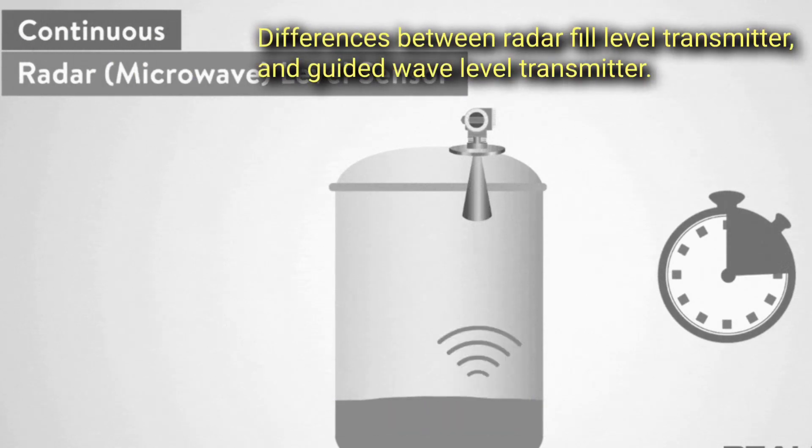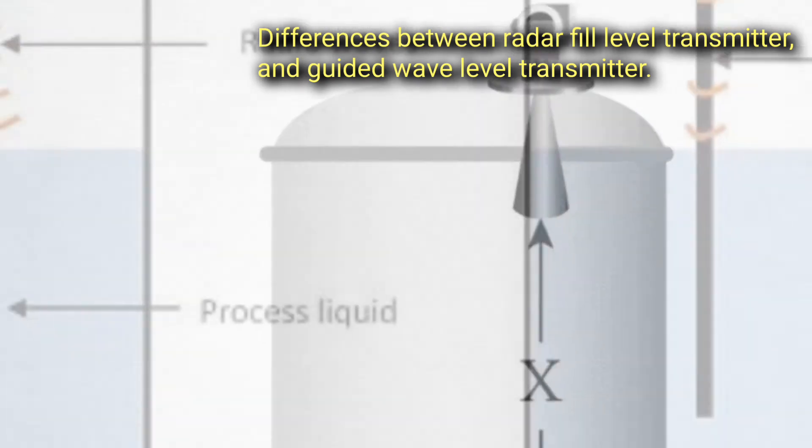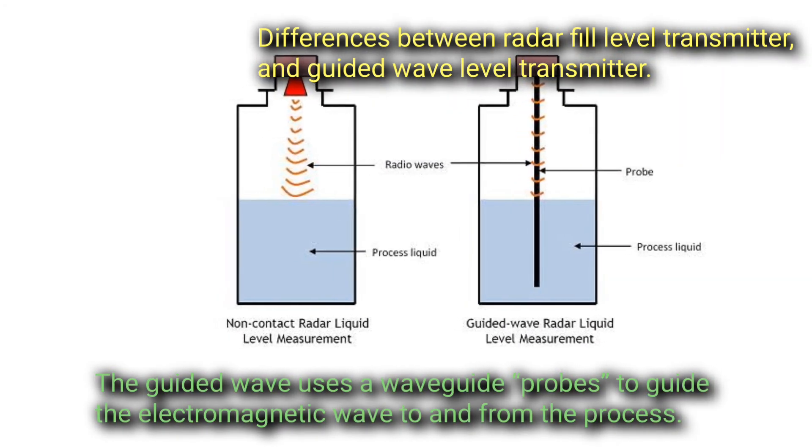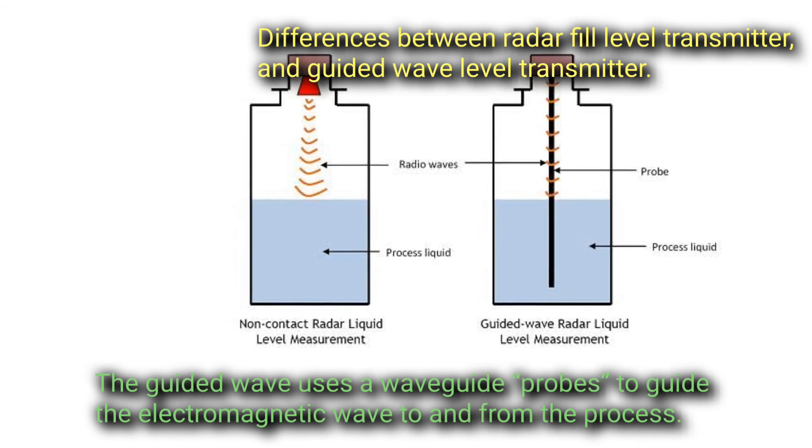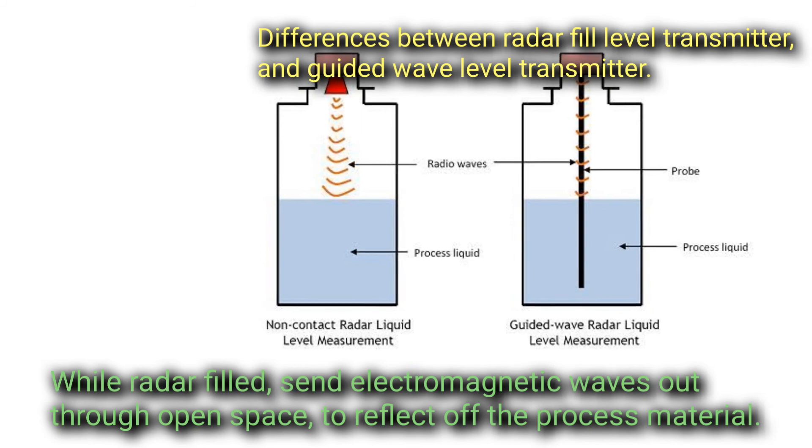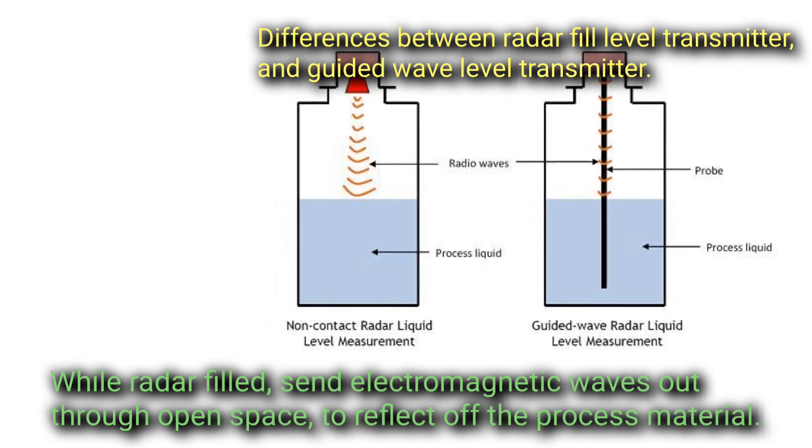Difference between radar fill level transmitter and guided microwave level fill transmitter is that the guided wave uses waveguide probes to guide the electromagnetic wave to and from the process, while radar fill sends electromagnetic waves out through open space to reflect off the process material.